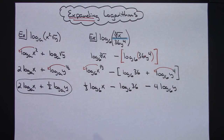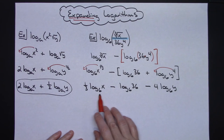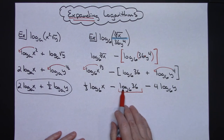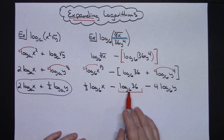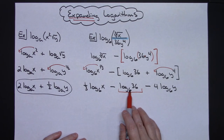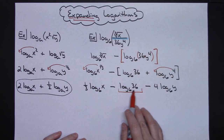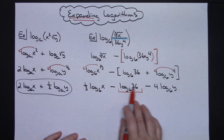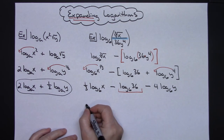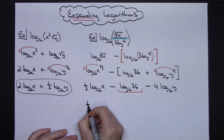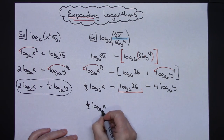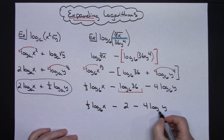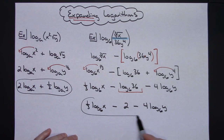I've gotten rid of the parentheses and jumped the frogs. Going through each term: x and y can't be evaluated further, but the log base 6 of 36 is all numbers, so I should evaluate it. I ask myself: 6 raised to what power equals 36? Since 6 squared equals 36, that evaluates to 2. So my final fully expanded logarithm is: 1/3 log base 6 of x, minus 2, minus 4 log base 6 of y.